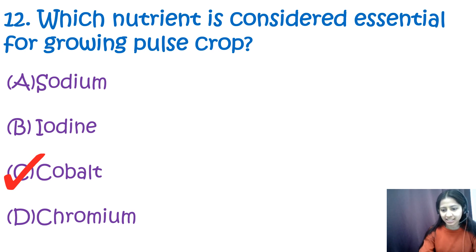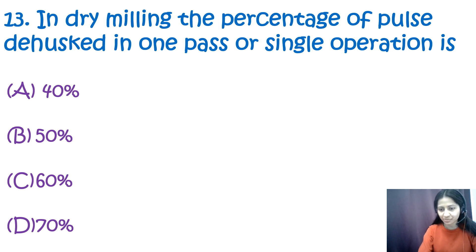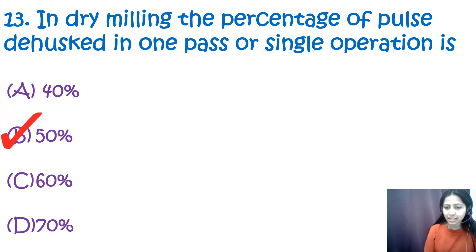Question 13: In dry milling, the percentage of pulse dehusked in one pass or single operation is 40%, 50%, 60%, or 70%? The correct option is B — 50%. In dry milling, about 50% of pulses are dehusked in one pass or single operation.